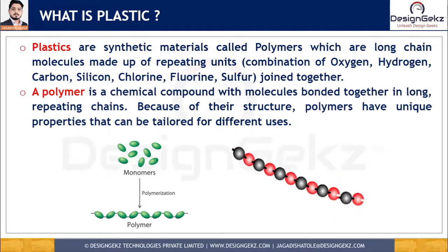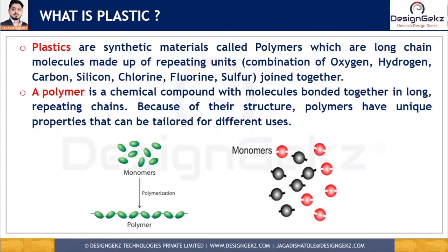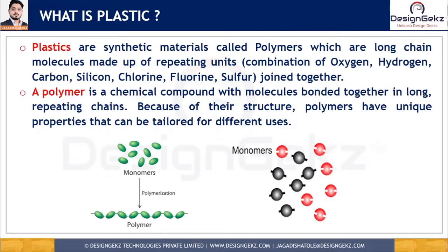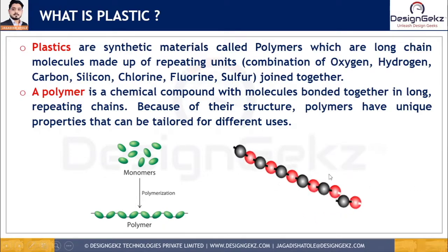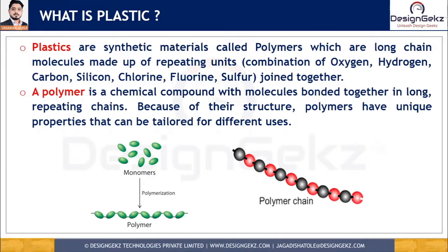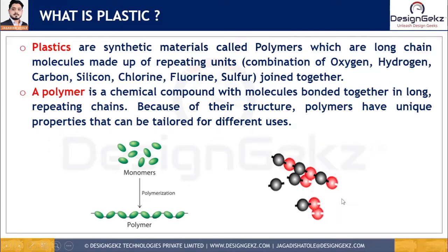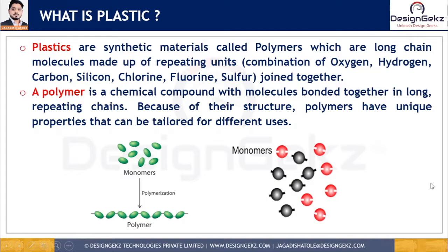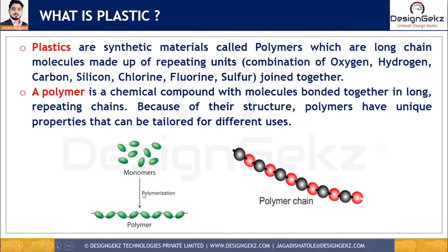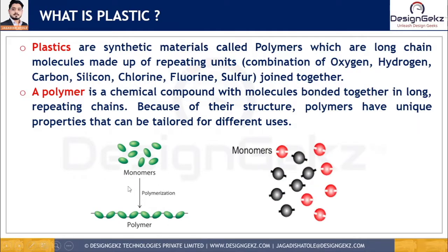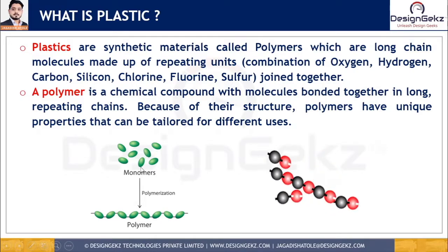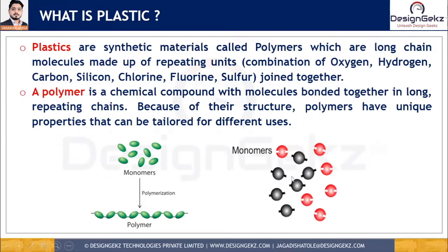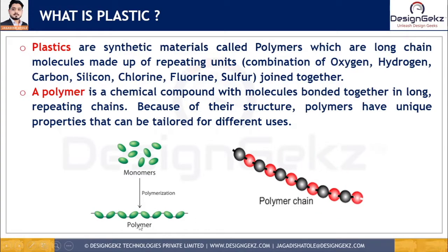We can customize plastics as per our requirement or as per the function and application requirement. As more repeating units are added, the plastic molecular weight increases, making the plastic heavier. Plastics are moldable in liquid state or upon heating, but exist in a solid state in their finished condition. They are popular because of their low weight, good strength-to-weight ratio when reinforced, and comparatively lower cost. Monomers are converted into polymers through a process known as polymerization, where small monomer molecules bind together to form a repeating chain.